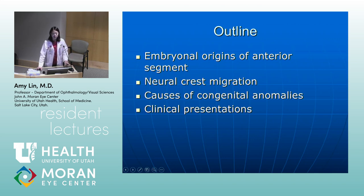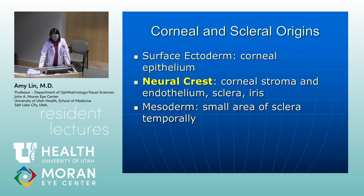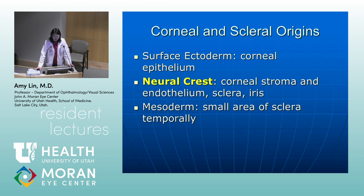First, a little introduction to the embryonal origins of the anterior segment. The cornea and sclera come from a few different embryonal tissues. The surface ectoderm is responsible for the corneal epithelium. Most of the cornea and sclera comes from the neural crest, which gives rise to corneal stroma and endothelium, pretty much all of the sclera, and also the iris.